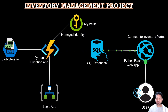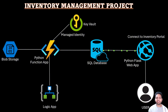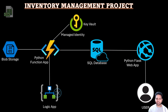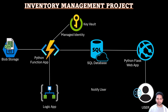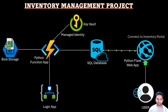The next step for the Function App is to connect with the SQL database. For that, we will create a SQL server and then create a SQL database on that server. Using the Function App, we will update the SQL database with the contents of the CSV file, which will have the details of the different products.